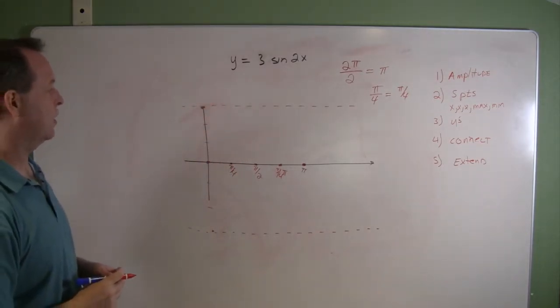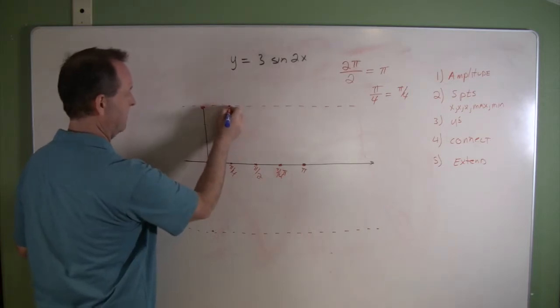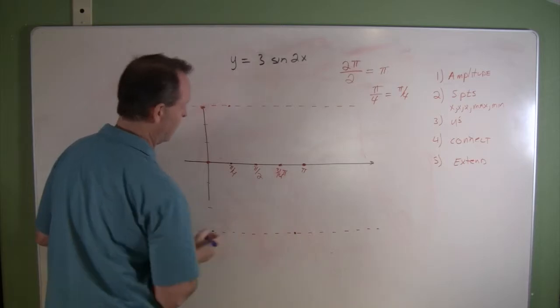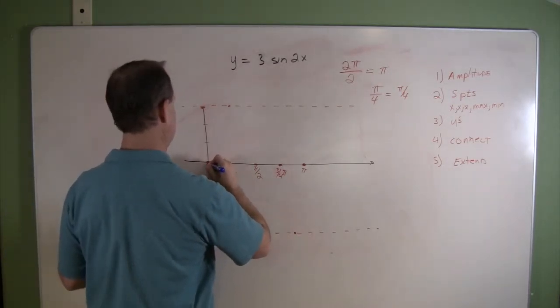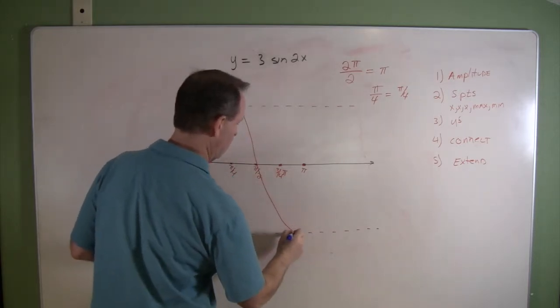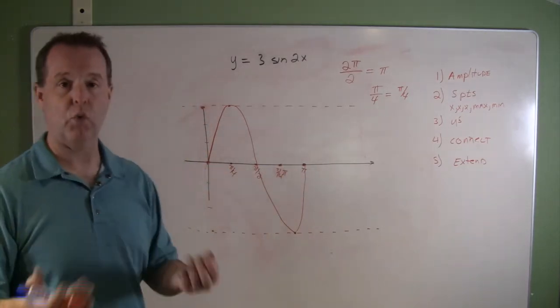So we can go ahead and start to graph this a little bit. This is a maximum, so I'm going to put a maximum value there. This is a minimum value right there. And there I have the graph.